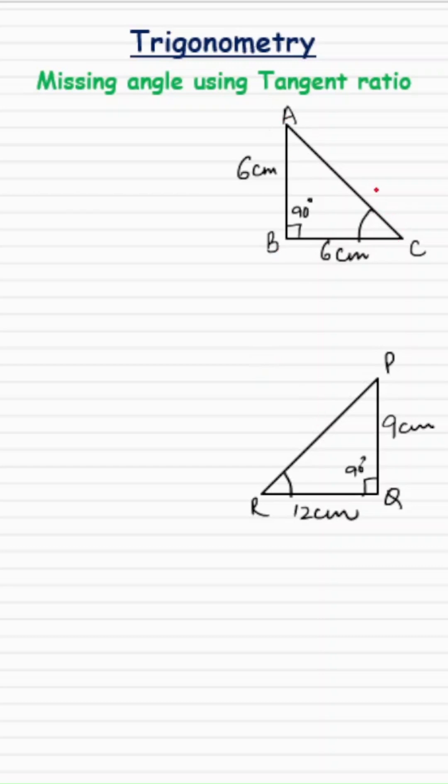So in triangle ABC, I want to find angle C when AB is 6, BC is 6, and angle B is 90 degrees. I want to find angle C, so tan of angle C—of course I know that tan is the ratio of the opposite side to the adjacent side.